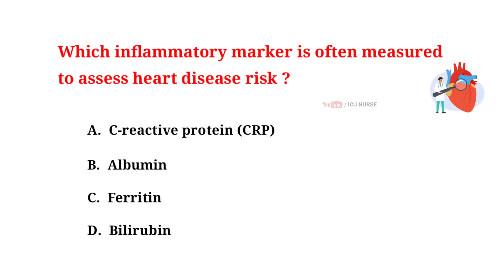Which inflammatory marker is often measured to assess heart disease risk? A. C-reactive protein. B. Albumin. C. Ferritin. D. Bilirubin.